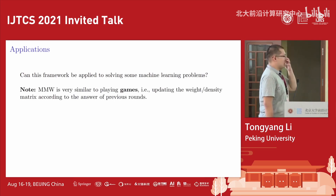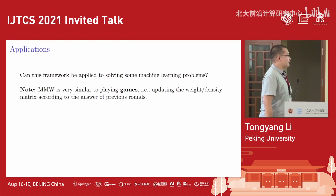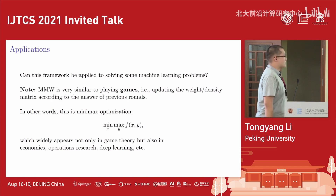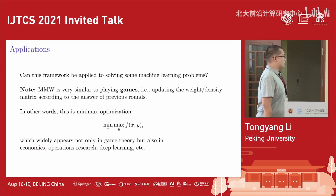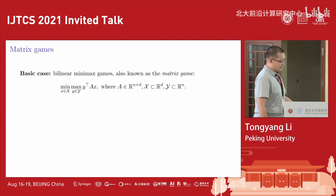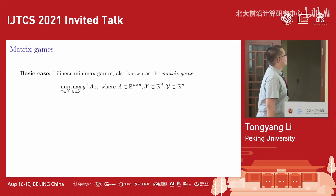From a high-level perspective, the matrix multiplicative weight method is very similar to playing games. This algorithmic framework is good at solving minimax optimization problems, where we have a function f with two inputs x and y — minimizing over x and maximizing over y. This is super important in game theory, economics, operations research, and deep learning, including adversarial learning.